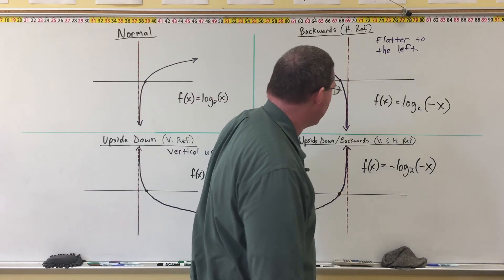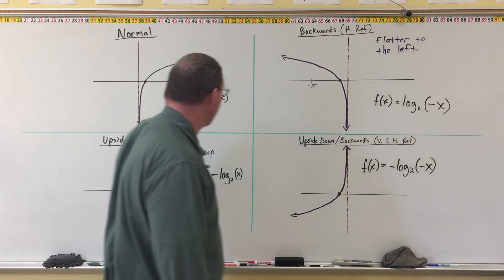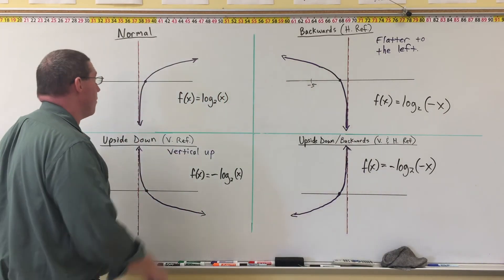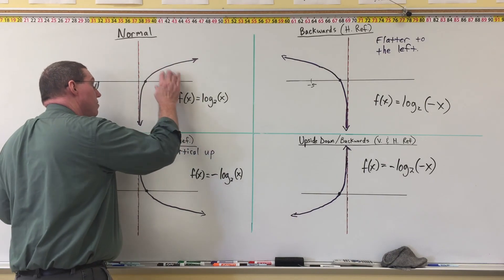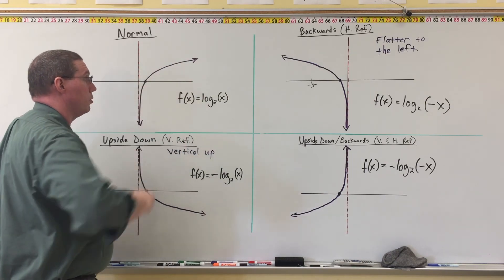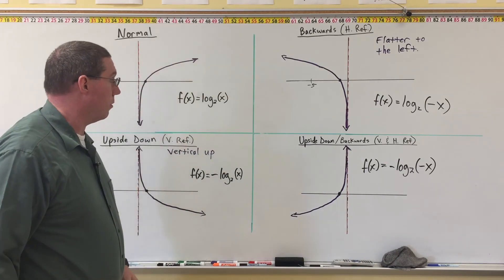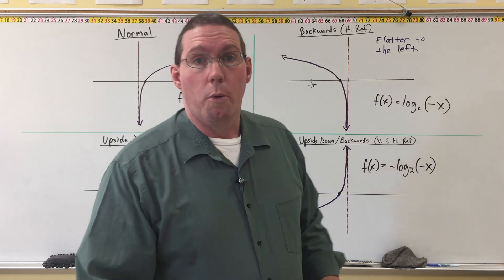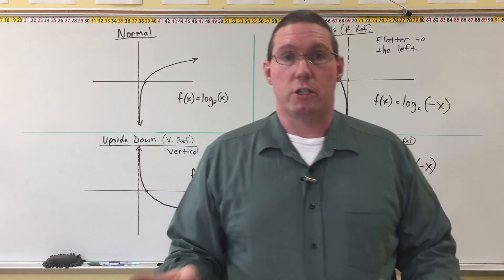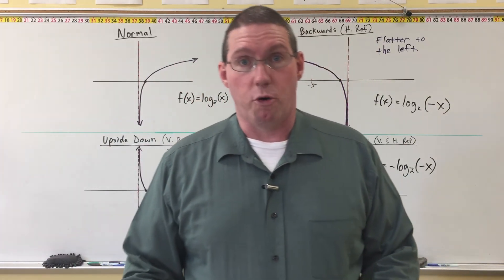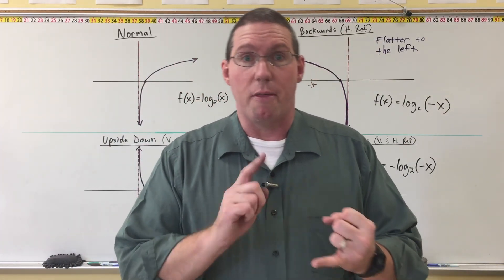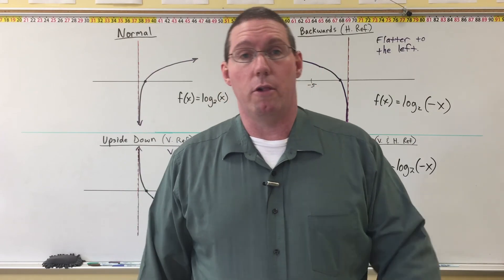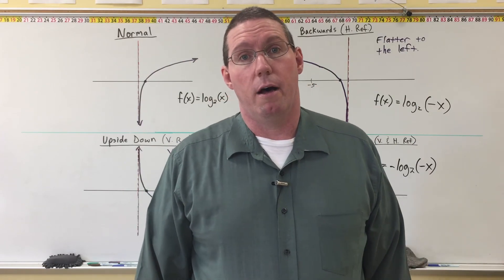And if it's upside down and backwards, it's going to be f(x) = negative log base 2 of negative x — we put the negative on the front for upside down, and a negative on the x because it is backwards. So that's the basics of reflections: what these graphs look like when they are reflected vertically, reflected horizontally, or reflected both vertically and horizontally. This is only going to make sense if you know what the basic normal shape looks like. We're going to use this in the next segment where I'll give you a bunch of graphs, and you'll identify the base and where to put the negatives on the logarithm functions.